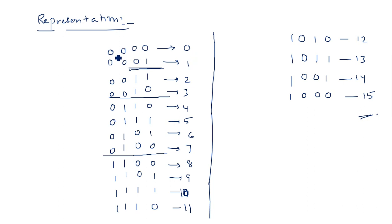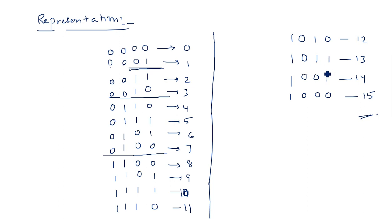If you take 0 and 1: decimal 0 is 0000 in gray code, and decimal 1 is 0001 — only one bit changed. From 1 to 2, only one bit changes. From 2 to 3, only one bit changes. Consider 13 and 14 — only the second bit is changed, the remaining bits stay the same. From 14 to 15, only the last bit changes. So gray code has a unit distance between successive numbers — that is an important feature.